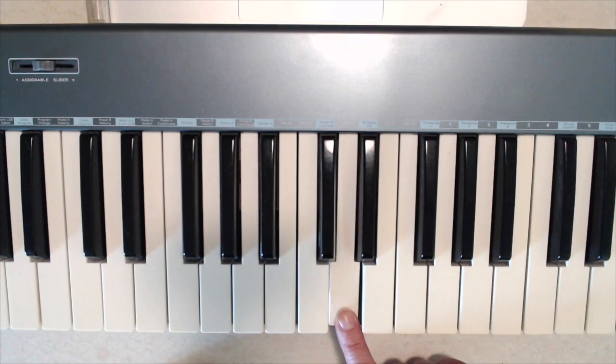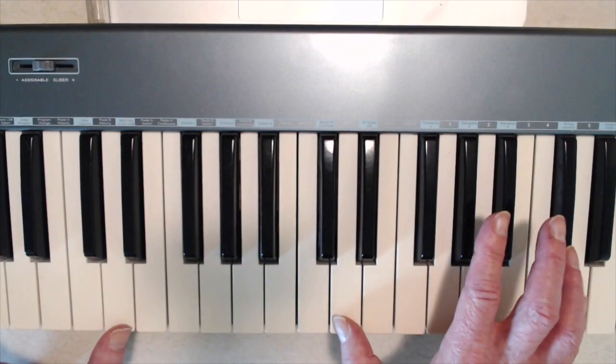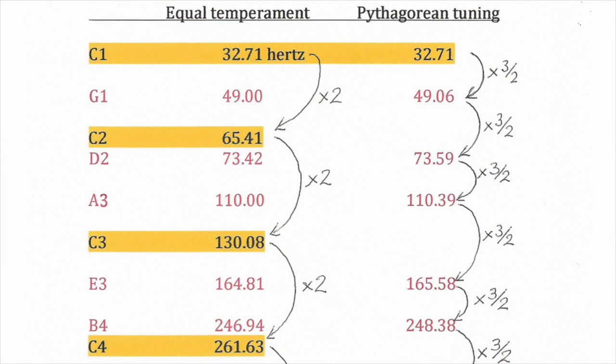For example, whatever note you start on, let's say I start on a D, it's going to sound perfectly consonant with a note that's several octaves higher. Here's one that's higher, here's one that's lower, and here's one that's lower still. And if I play all of those together, they sound perfectly consonant.